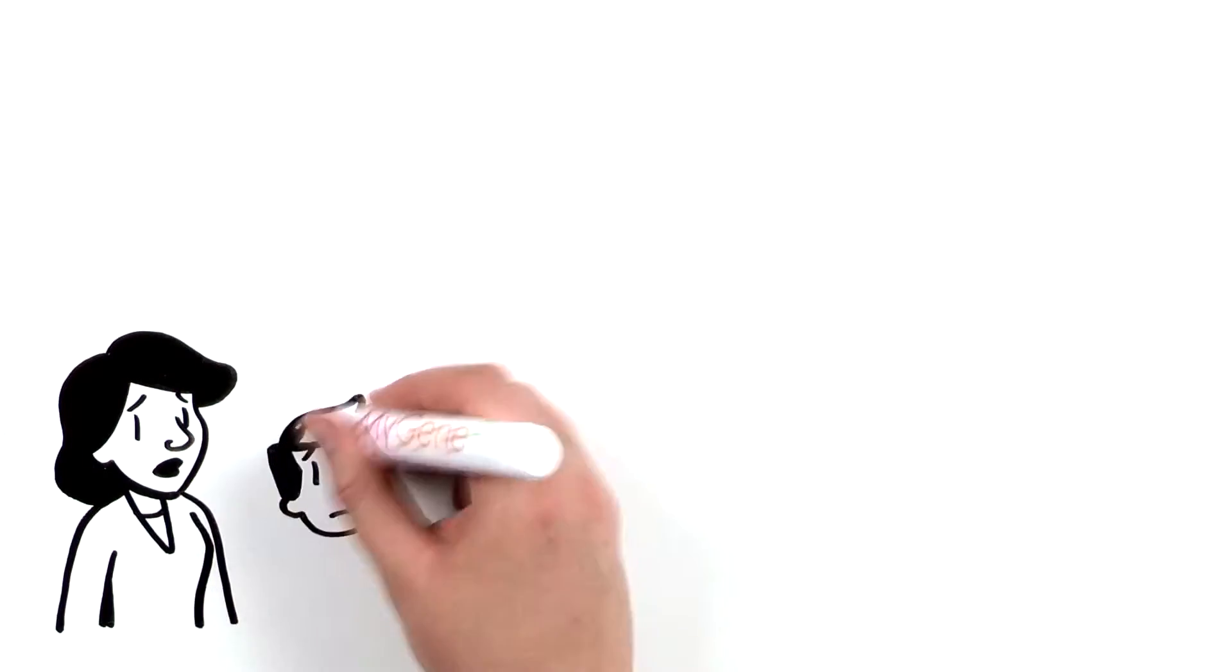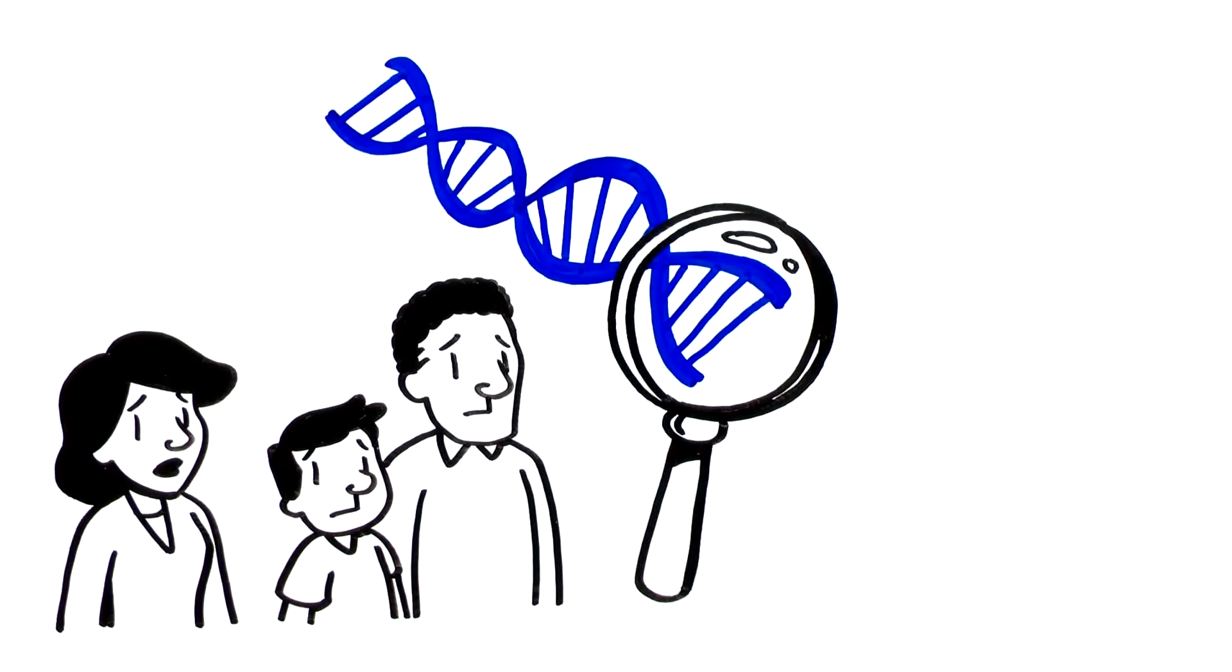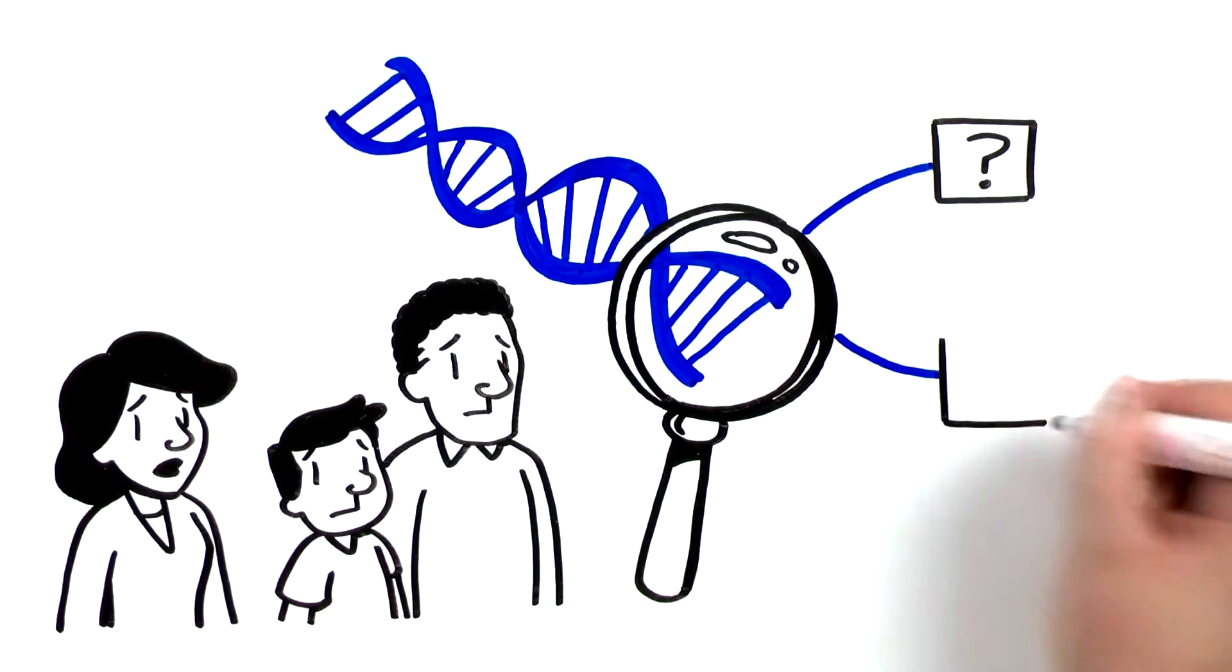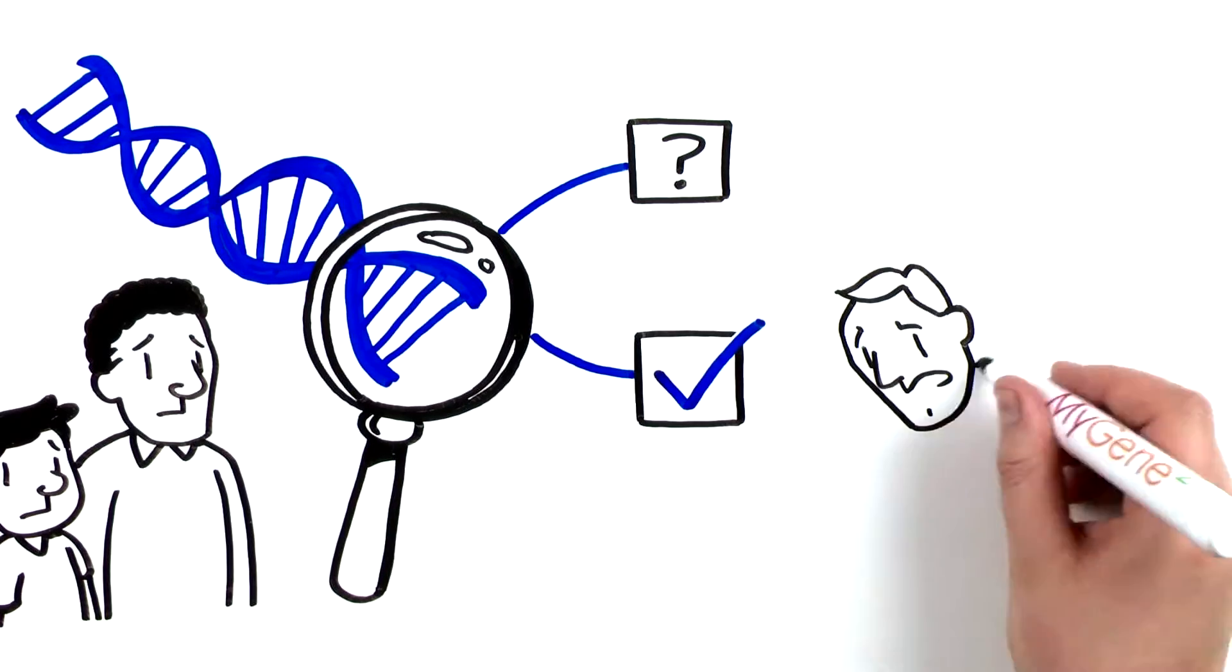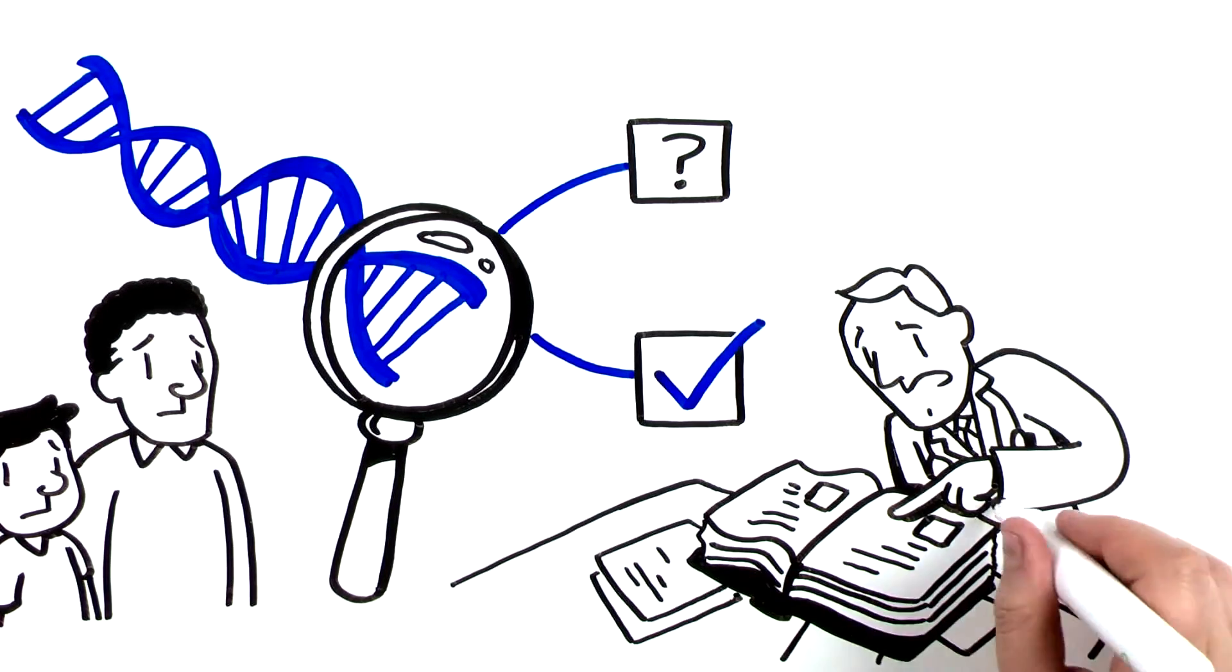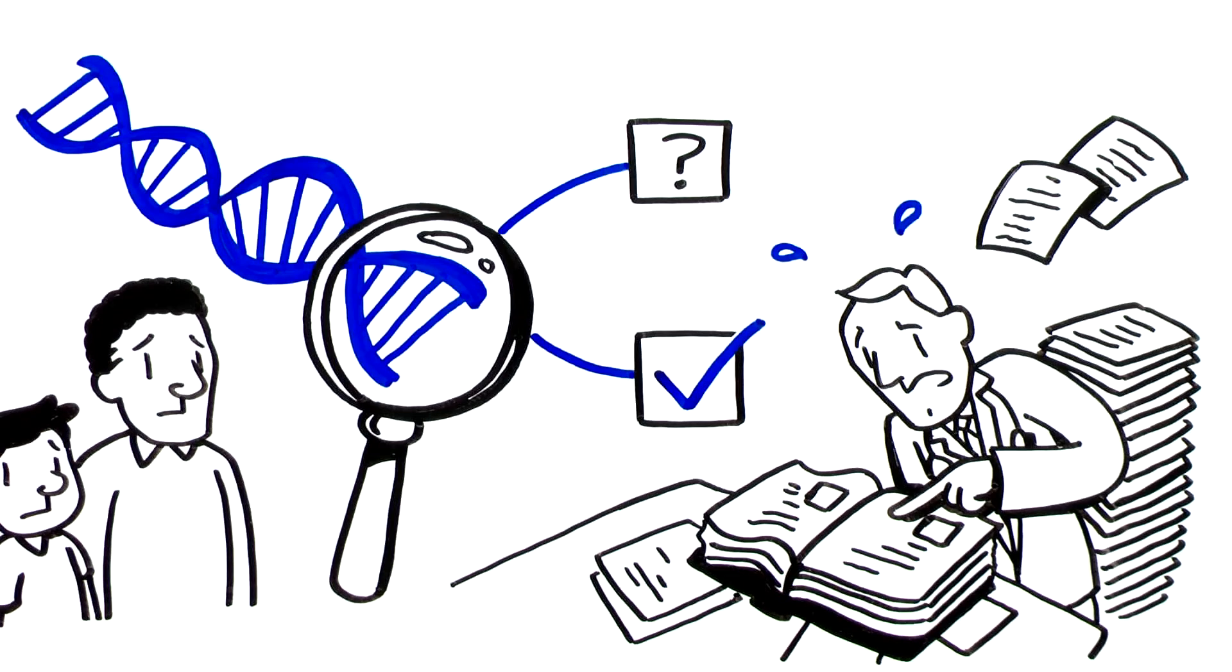This means that most families who undergo clinical testing don't get a precise genetic diagnosis. And even when a diagnosis is made, the condition is so rare it's hard to find information about the sorts of health problems caused by each mutation.